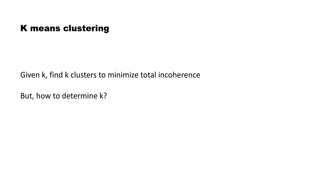In K-means clustering, we want to say upfront: I want to create K clusters. Given K, find K clusters to minimize the total incoherence — in other words, find K highly coherent clusters. But the key question is: how do you determine the value of K? If the data is simple, like our example, I can say two clusters looks good. But with a large dataset and many dimensions, how do we determine K upfront?